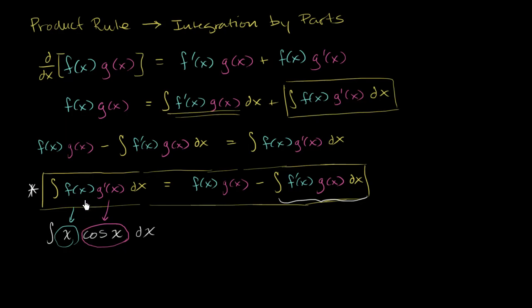If we did it the other way around, if we said f of x to be cosine of x, then we're taking its derivative here. That's not that much more complicated. But if we said g prime of x equaling x, and then we had to take its antiderivative, we get x squared over 2. That is more complicated. So let me make it clear over here.